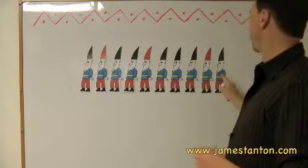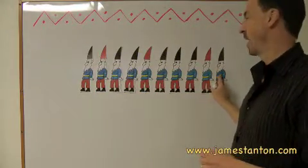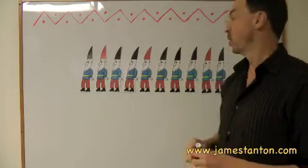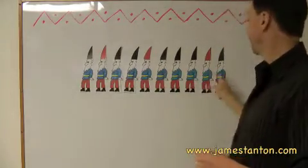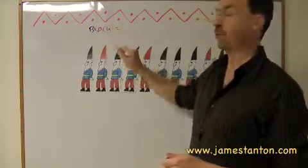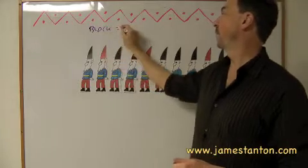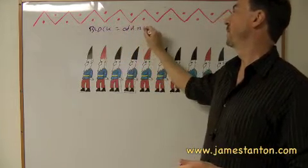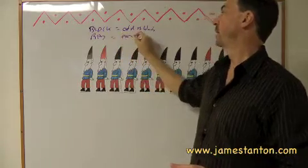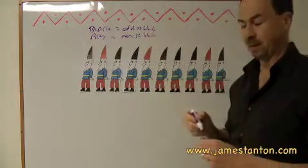Okay, here's how this noble tenth gnome can save the lives of the remaining nine gnomes in front of him, with the use of a single word. So the gnomes will agree before they play this game that this tenth gnome will just say the word black if he sees before him an odd number of black hats in front of him. So an odd number of blacks. And he'll say the word red if he sees an even number of black hats.